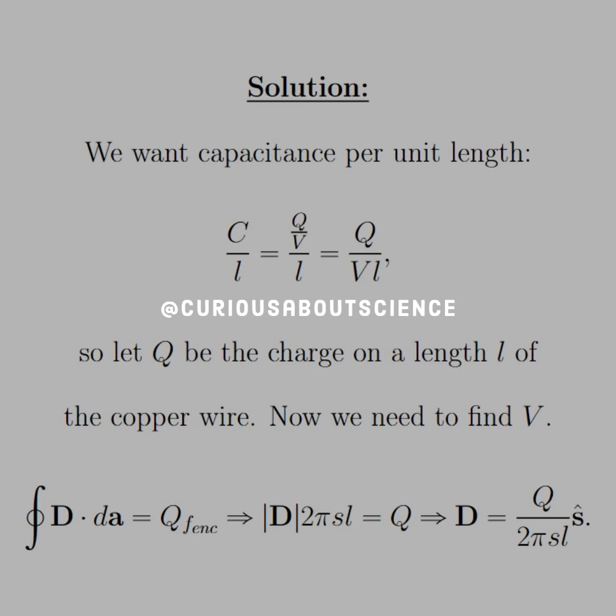So let Q be the charge on a length L of the copper wire, and now we'll just need to find V, the potential. We used Gauss's law for the electric displacement, and we see that the free enclosed charge is just Q, which we'll see why we label it as that soon.